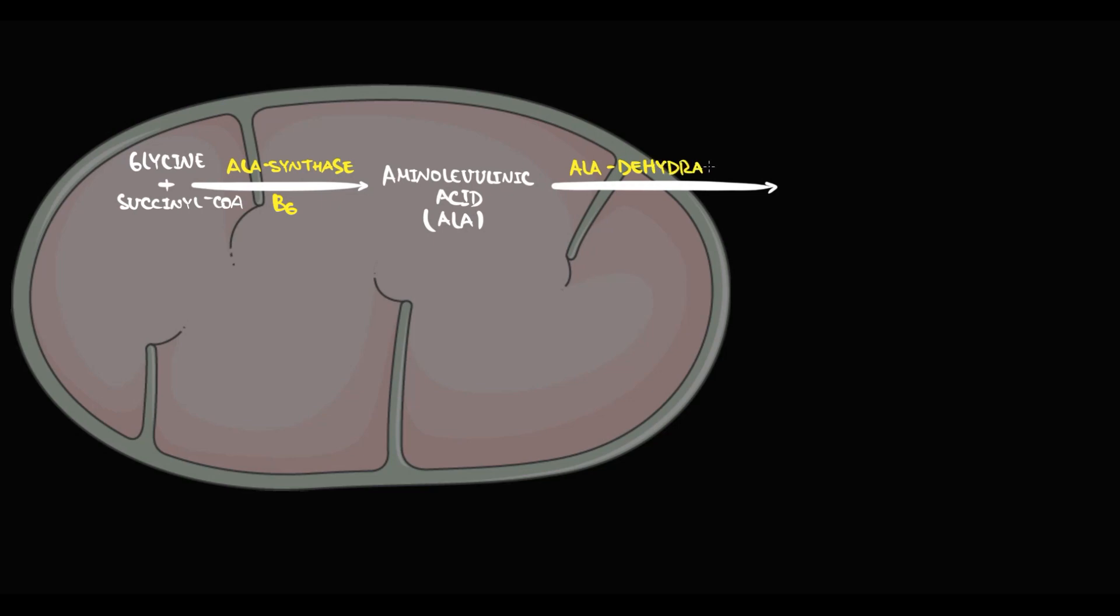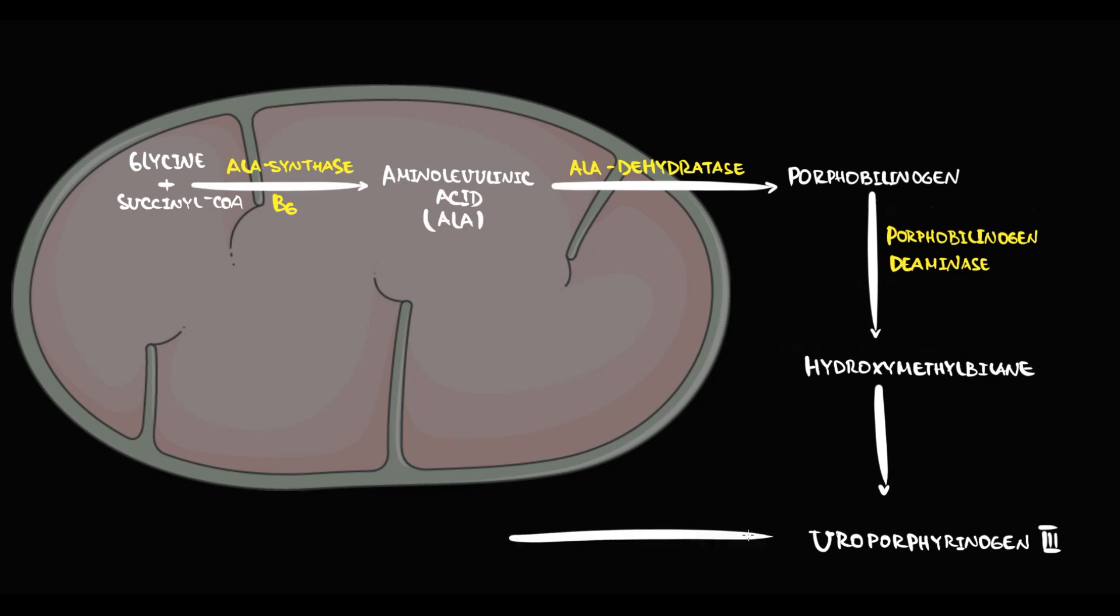ALA then moves to the cytoplasm, where it undergoes conversion by ALA-dehydratase into porphobilinogen. Then porphobilinogen by porphobilinogen-deaminase is converted into hydroxymethylbilane. Hydroxymethylbilane is converted into uroporphyrinogen, and uroporphyrinogen by uroporphyrinogen decarboxylase undergoes conversion into coproporphyrinogen. This molecule enters the mitochondria, where it undergoes conversion into protoporphyrin.